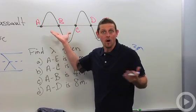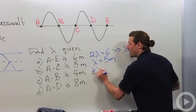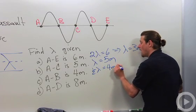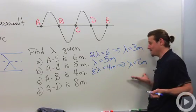So that means that one half of the wavelength will be four, and that means that the wavelength will be eight meters.